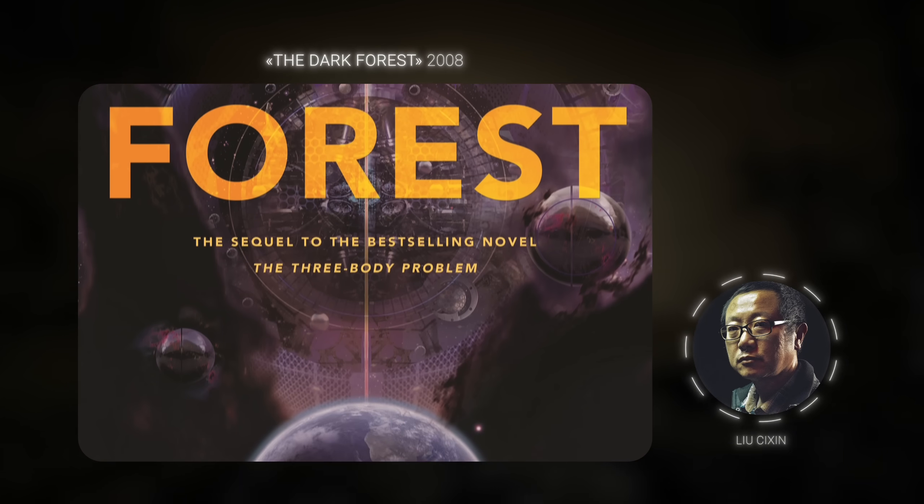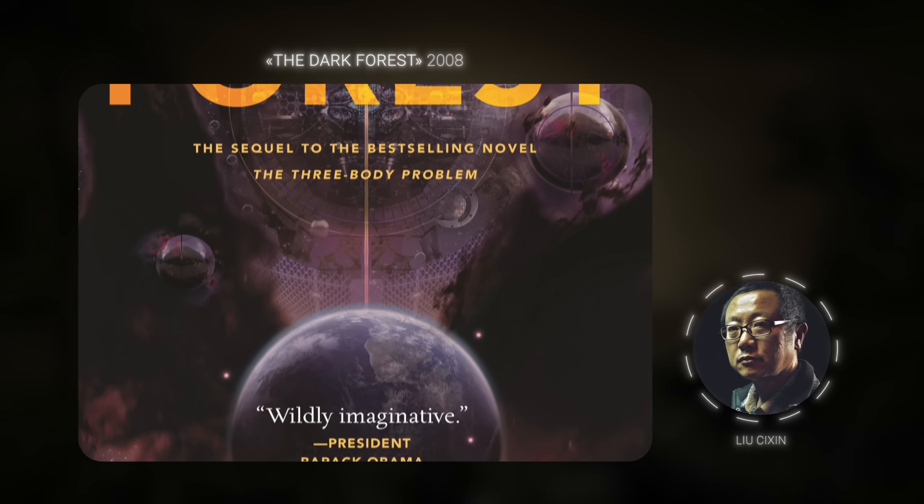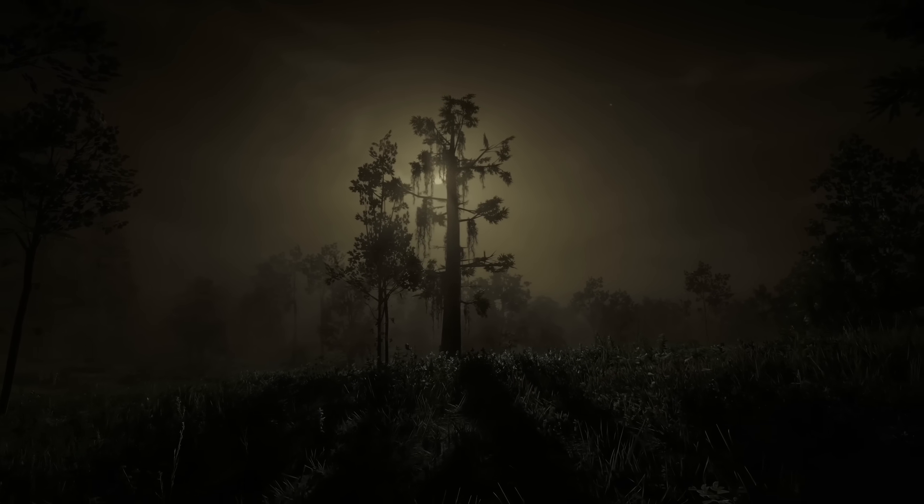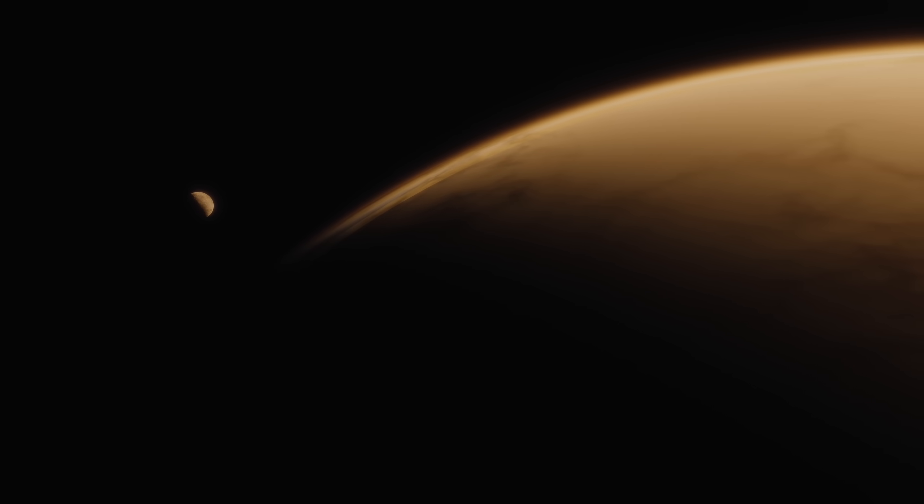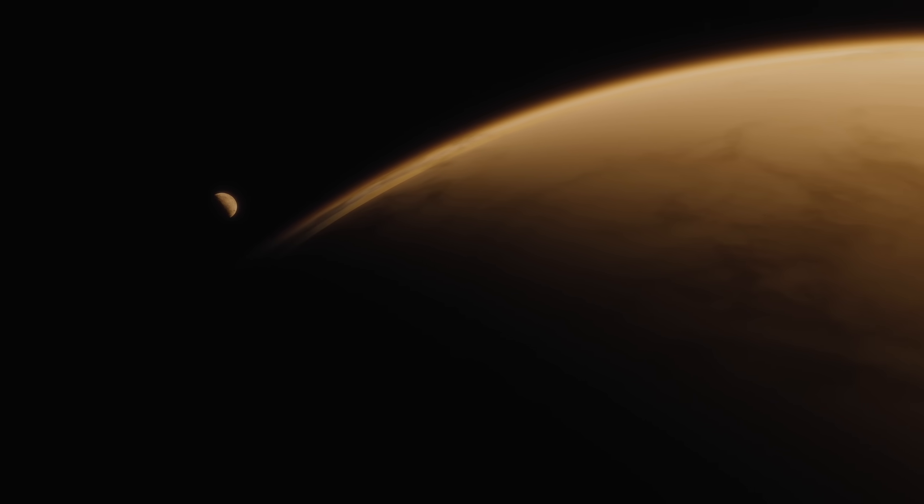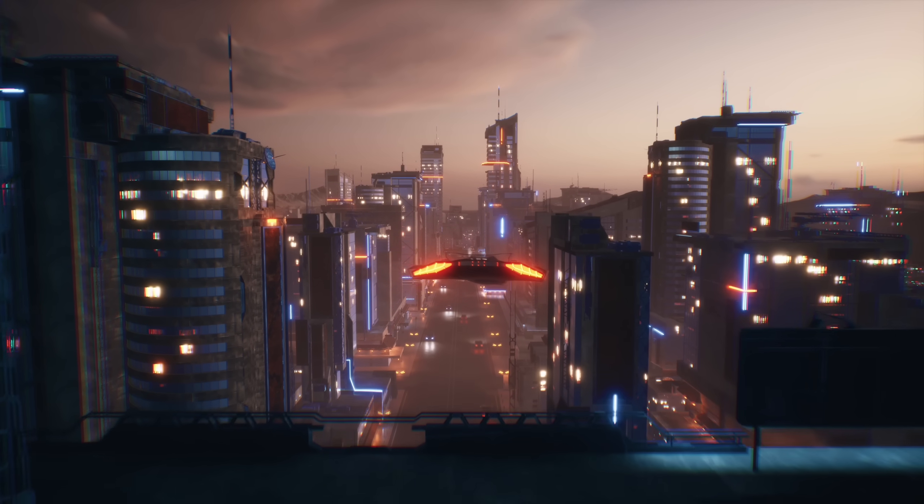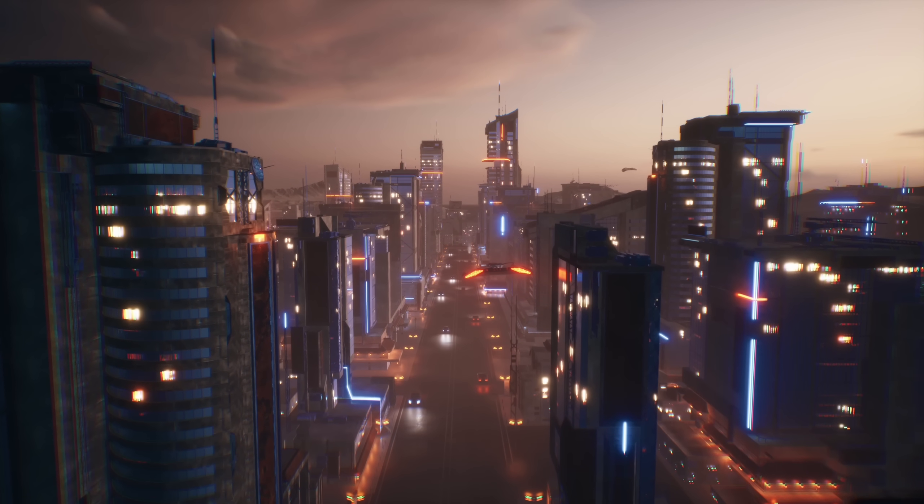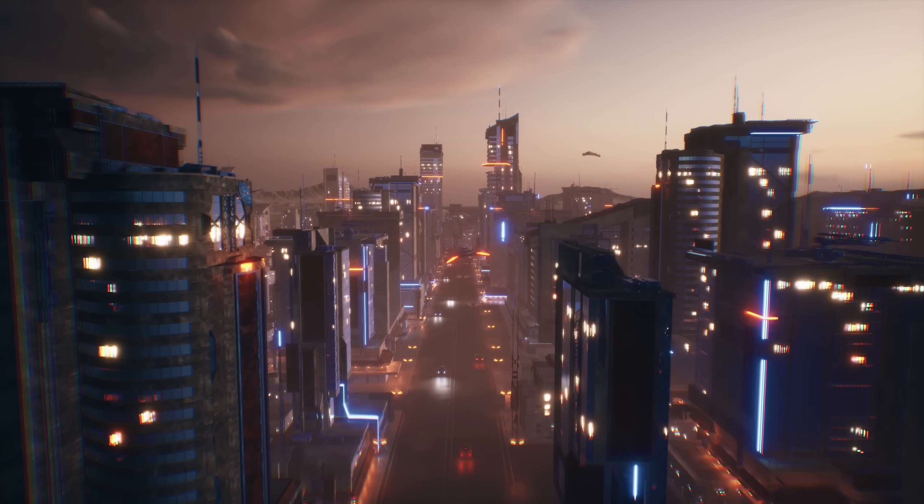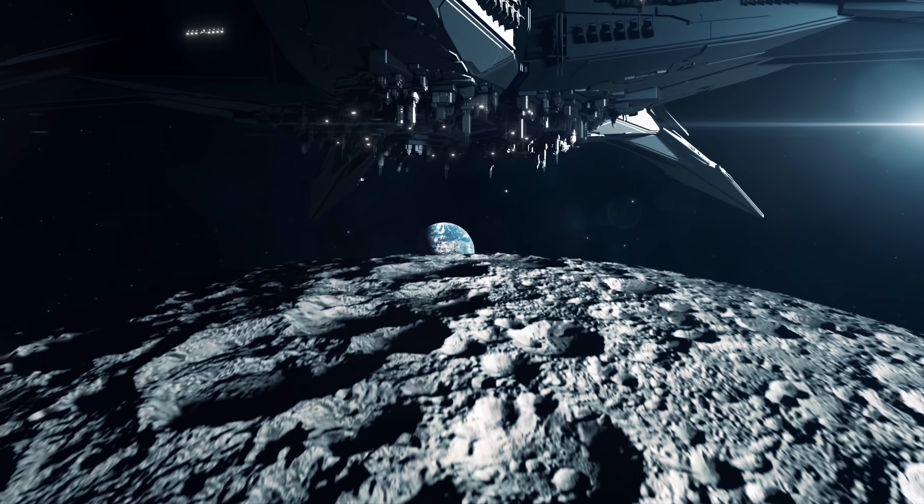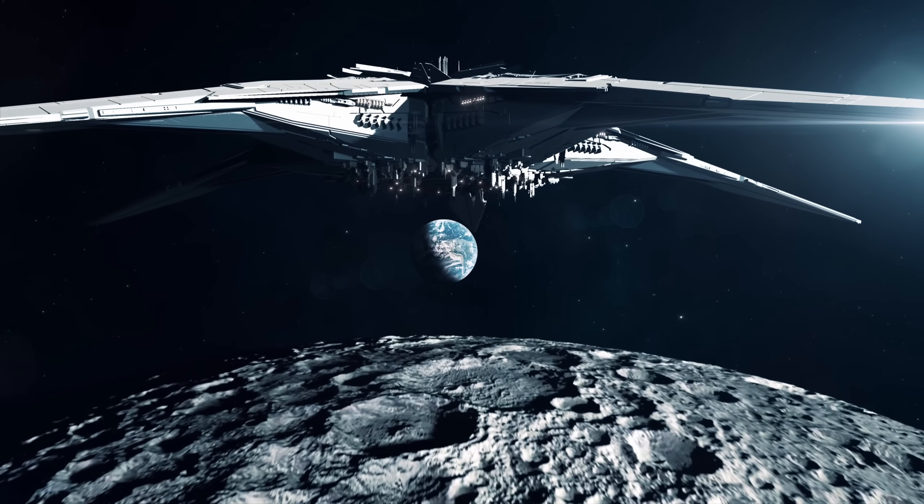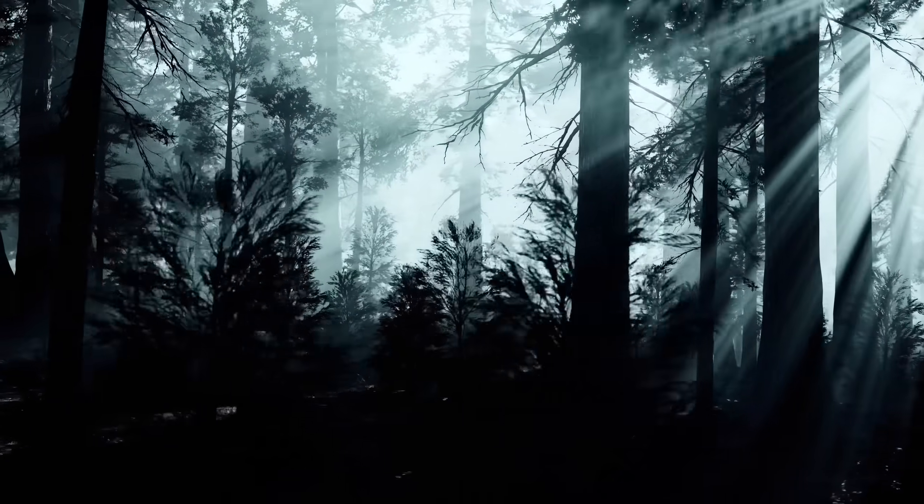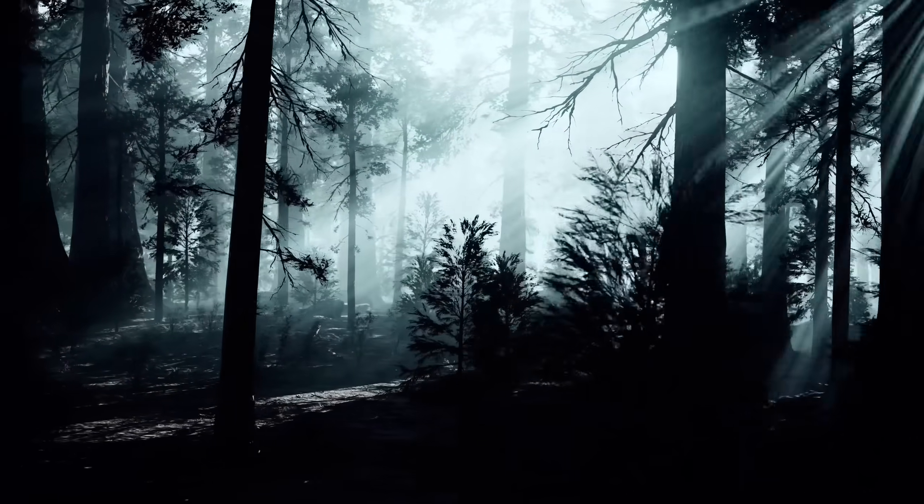The dark forest theory was first outlined in this book. The gist of the theory is that every civilization, on a cosmic scale, seeks to obtain the resources necessary for its continued survival. Therefore, any extraterrestrial life hides in order to not be destroyed by another civilization. And also, in order to be able to attack and ensure its own survival. So, why is this theory called The Dark Forest Hypothesis?